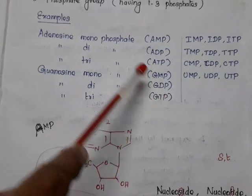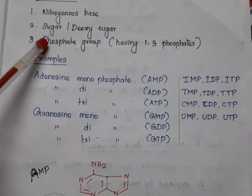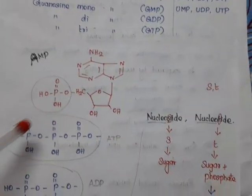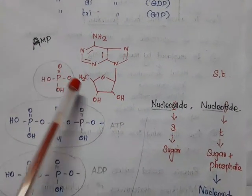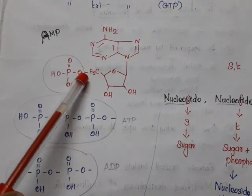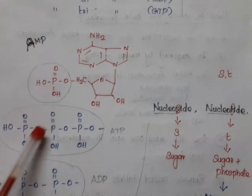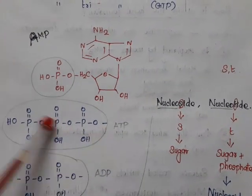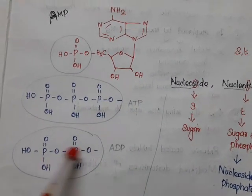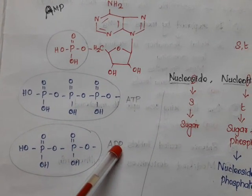So a nucleotide has three parts: a nitrogenous base, a sugar or deoxy sugar, and a phosphate group having one to three phosphate groups. For example, in the structure of adenosine we have CH2OH. The H is replaced by one phosphate — that is adenosine monophosphate. If replaced by three phosphates, that is adenosine triphosphate. If replaced by two phosphate groups, that is adenosine diphosphate.